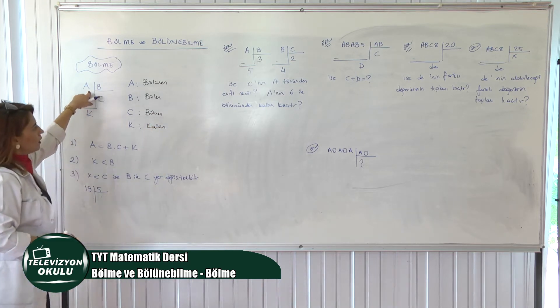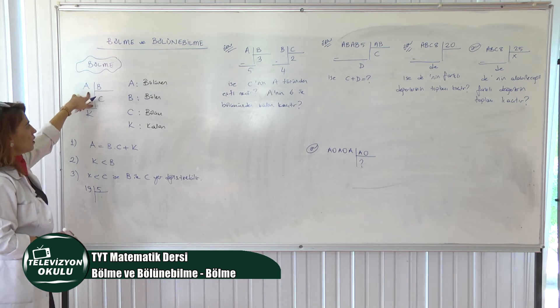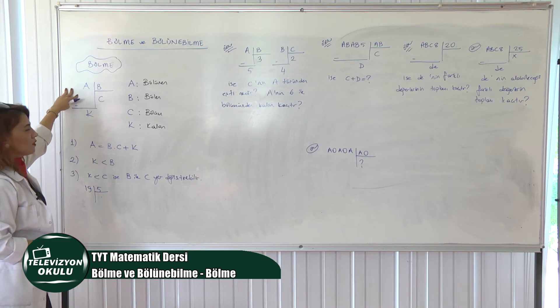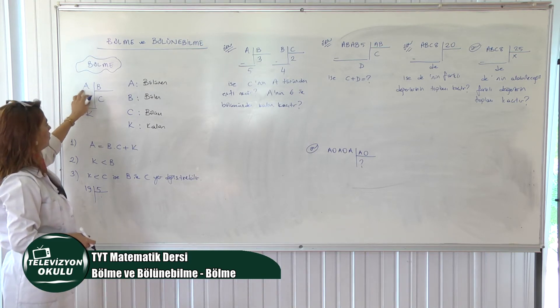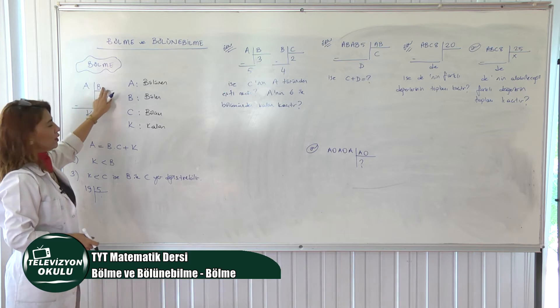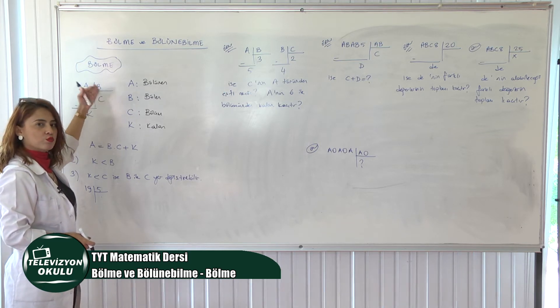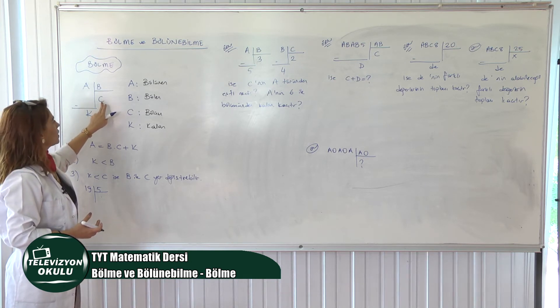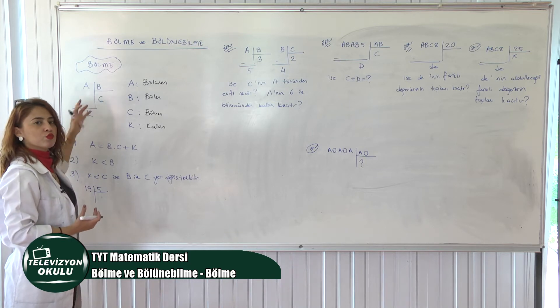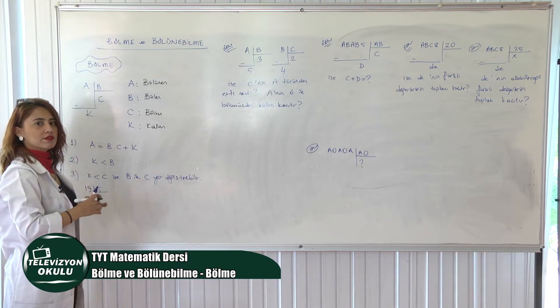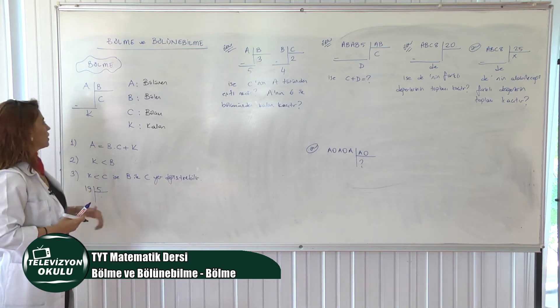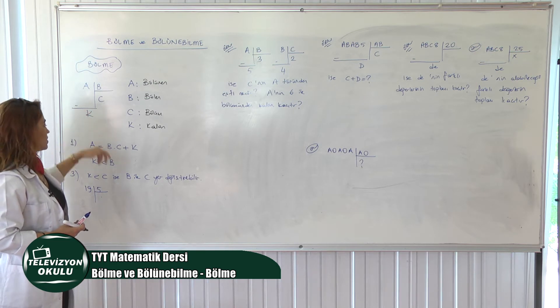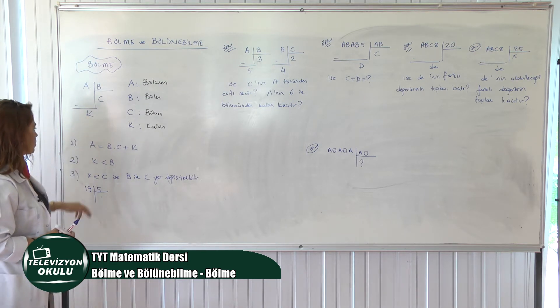Bunu hala aklında tutamayan varsa arkadaşlar. Ben bölüneni, böleni, bölümü karıştırıyorum diyen varsa şöyle bir benzetme vardı internette. Şöyle bir resim çizilmişti. A, bütün bir karpuz. B, onu bölen bıçak. Bıçak karpuzu bölüyor. Bölen. C sayısı bölüm yani karpuzun dilimi bıçak karpuzu böldükten sonra ortaya çıkan şey nedir? Karpuz dilimidir. Ne kalır yendikten sonra peki? Karpuzun kabuğu kalır. K'da karpuzun kabuğu. Böyle de aklınızda tutabilirsiniz bölünen, bölen ve bölümü karıştırmamak için.